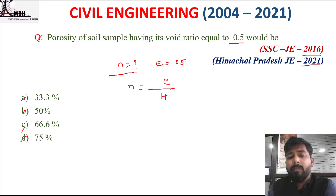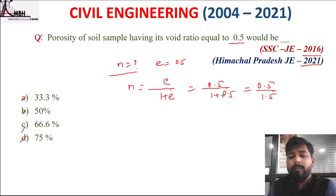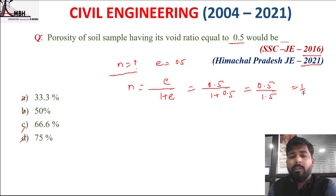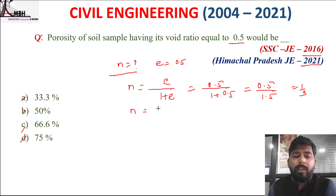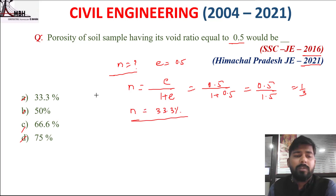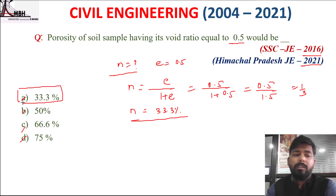Using n = e / (1 + e) = 0.5 / (1 + 0.5) = 0.5 / 1.5 = 1/3 = 33.3%. The correct option is A, that is 33.3%.